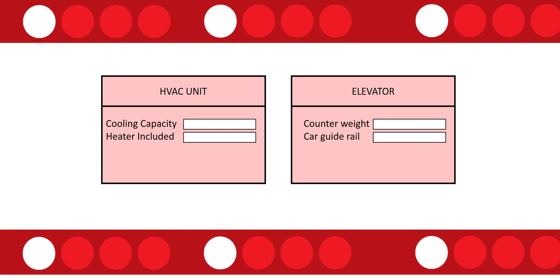You might think this is basically the same as tracking different fields on customer assets — for the HVAC unit we track cooling capacity and heater included, for the elevator we track counterweight and car guide rail. The key difference is that we're not creating new custom fields on the entity; instead we're using these asset properties. Let me show you how that works.